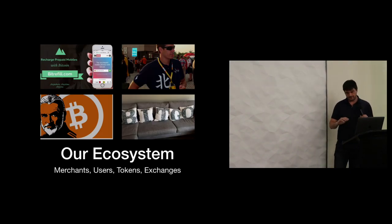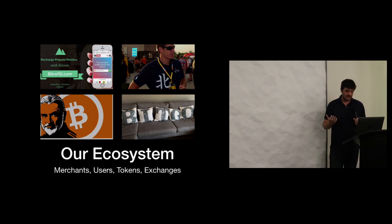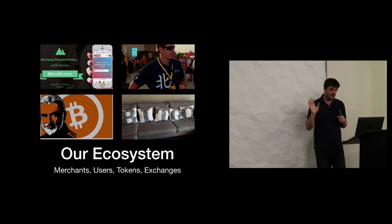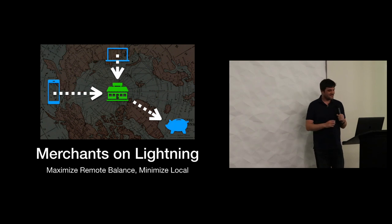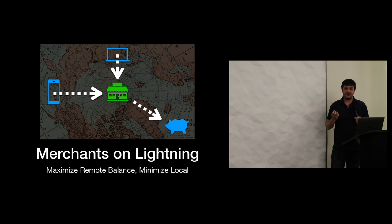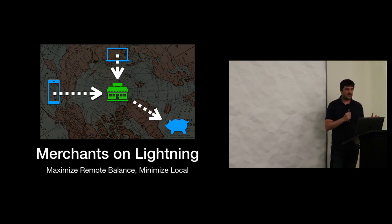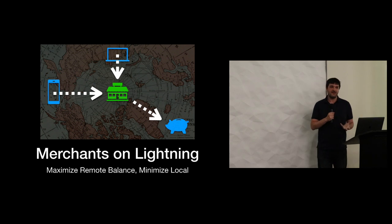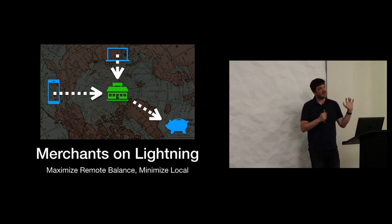Thinking about submarine swap use cases, there are four types of people in the ecosystem: merchants selling stuff, hodlers and buyers and speculators, people launching new coins, and exchanges facilitating speculation. For merchants on Lightning, they want to maximize the number of people who can pay them and minimize money flowing out. A merchant doesn't need to pay out much but really wants people to easily pay them.